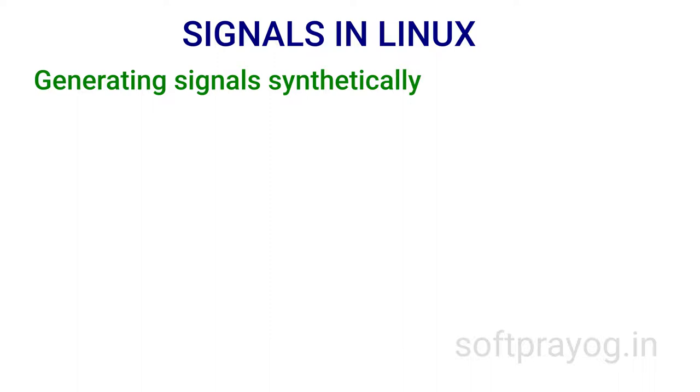Signals may be generated naturally — for example when a process tries to access non-existent memory or when there is a divide by zero — and signals can be generated synthetically using system calls like kill. We will now look at some system calls that generate signals synthetically.